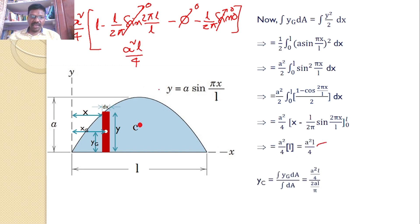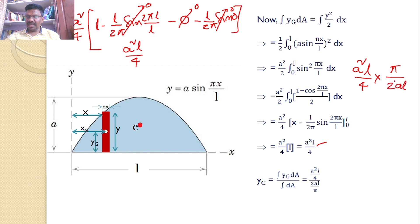The y-coordinate of the centroid yc = ∫yg·dA / ∫dA = (a²l/4) / (2al/π). Simplifying: (a²l/4)·(π/2al). Here a cancels with a and l cancels with l, giving yc = πa/8. This is the final answer.